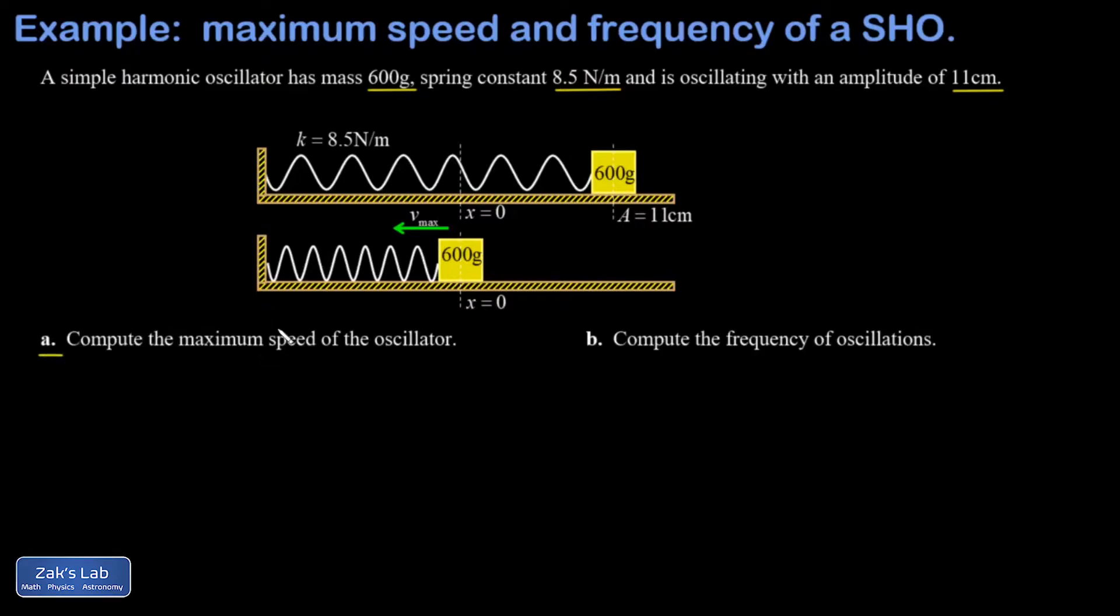The potential energy stored in the spring is one half kx squared where x is the displacement from the equilibrium position. When x equals a, when I'm at this turning point at the maximum displacement from equilibrium, all the energy is spring potential energy because the mass is turning around. It's momentarily stationary, there's no kinetic energy. So the total energy in this oscillator equals one half k a squared.